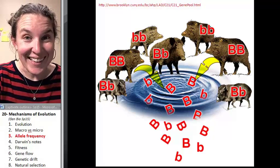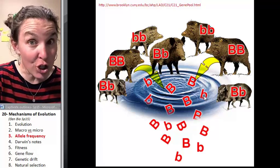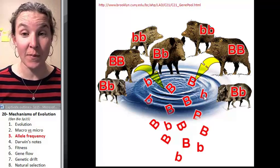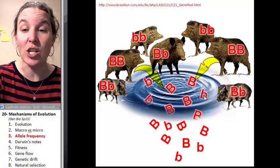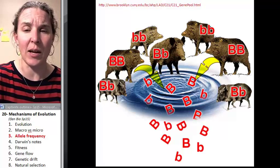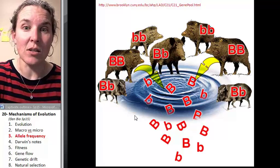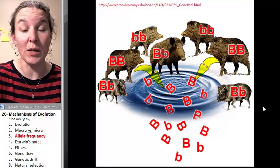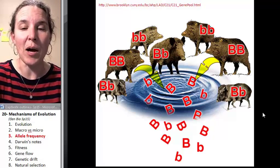The allele frequency is basically the percentage of alleles in your gene pool, which is all the alleles in the population. What percentage of those are the allele you're interested in, such as little b? We could count up how many total warthogs there are, how many little b alleles there are of all the warthog alleles, and then calculate the percentage of little b alleles and the percentage of big B alleles. That's the allele frequency in a population.